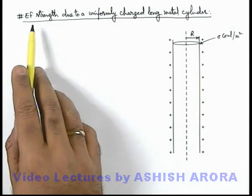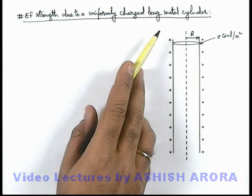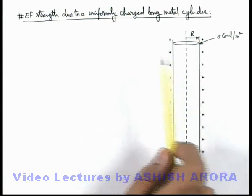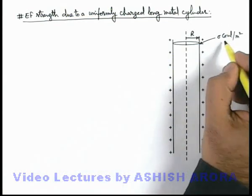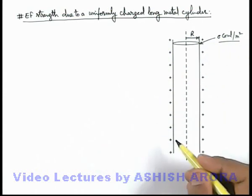Let us now calculate electric field strength due to a uniformly charged long metal cylinder. Here you can see the figure in which, on a long metal cylinder some charge is given, and the charge is distributed only on the outer surface with uniform charge density sigma coulomb per meter square.